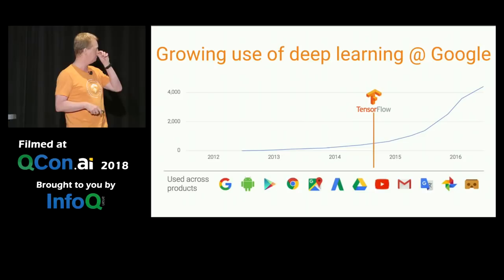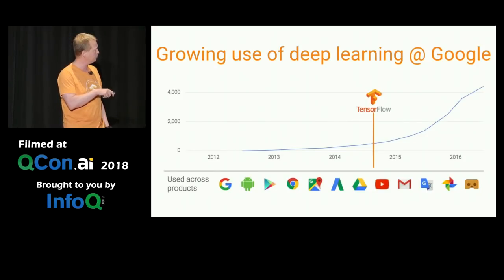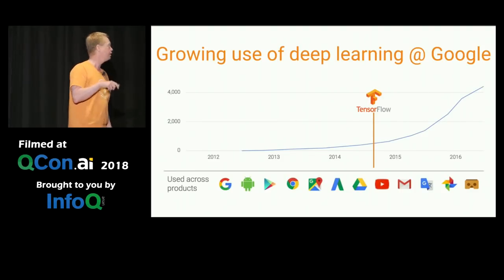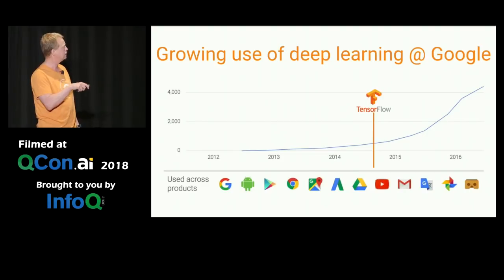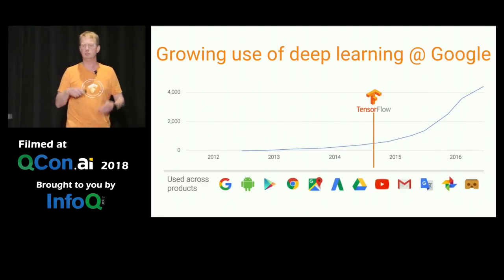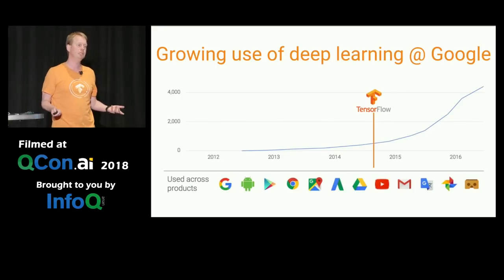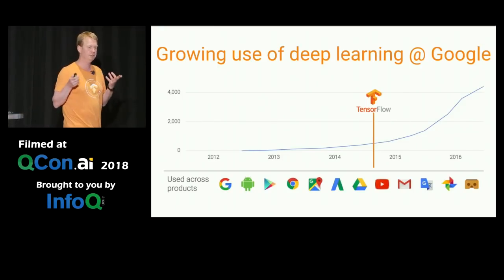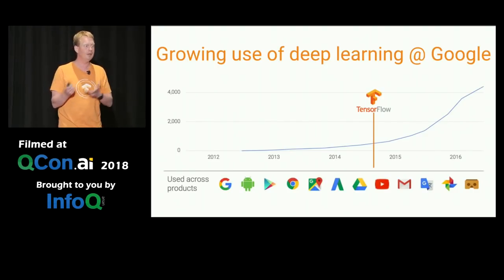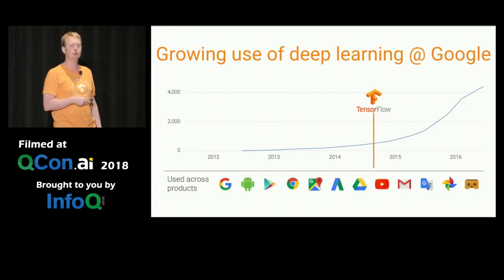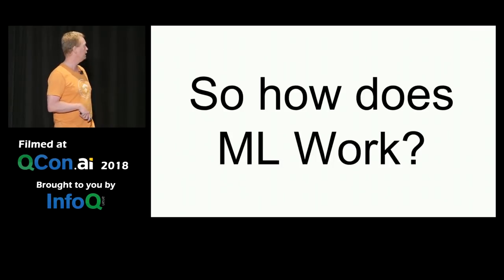We open sourced this back in 2014. As you can see, the number of machine learning models at Google slowly grew, and then when we released TensorFlow, there was this hockey stick kind of traction upwards. Every single service you use from Google nowadays is built on machine learning models built on TensorFlow. And if you've heard, Google is now an AI-first company — we used to be a mobile-first company. So TensorFlow has a lot of investment going into making this work.